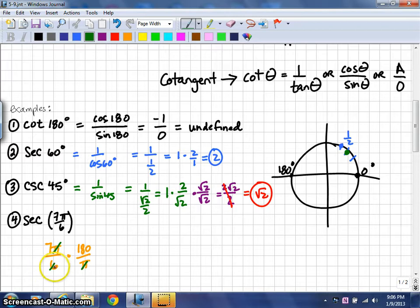6 goes into 18. 6 goes into itself one time, and 6 goes into 18 three times. And then we keep the 0 there. So, that makes it so that the bottom just becomes a 1. And on the top, we just do 7 times 3, which is 21, which is 0. So, we get 210 degrees.